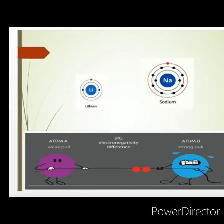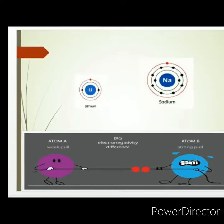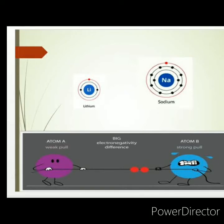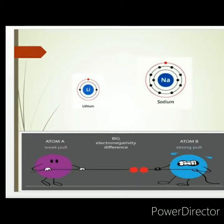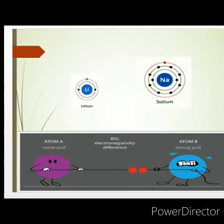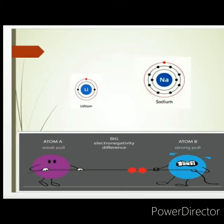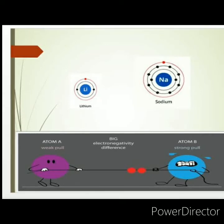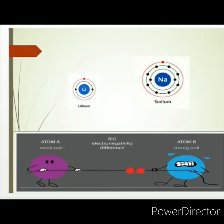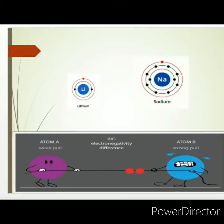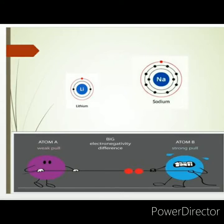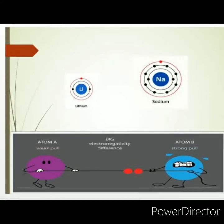What is electronegativity? Before moving to that idea, we will again consider two atoms — lithium and sodium — because they have a difference in their size. Consider one electron incoming to lithium and another electron coming to sodium. We are not considering the electron already present inside the atom; we are considering an electron coming to lithium and one coming to sodium. In which case will the atom have the tendency to attract that incoming electron easily?